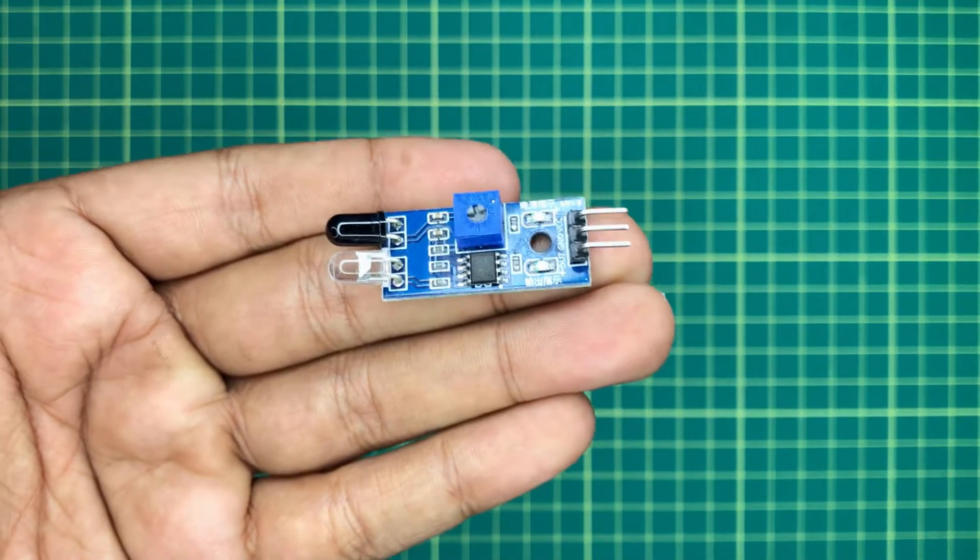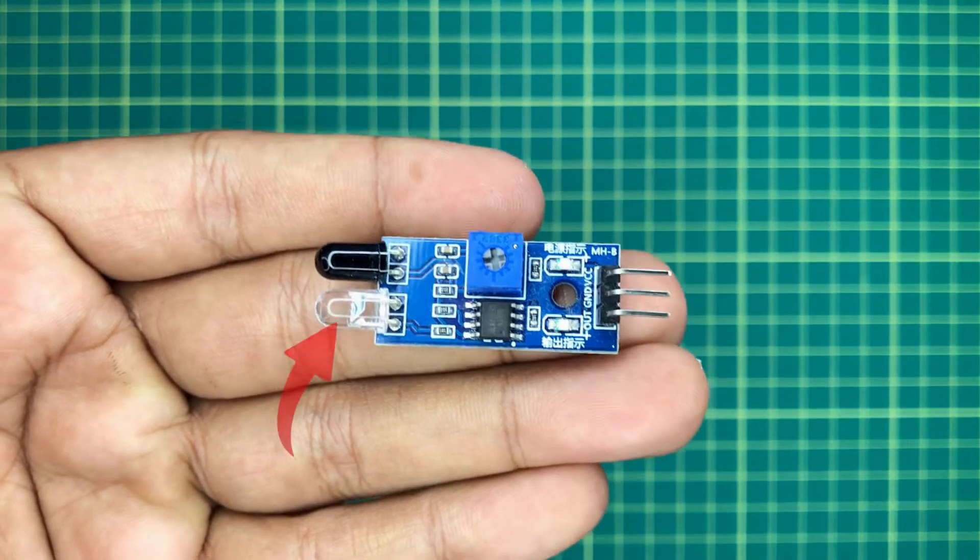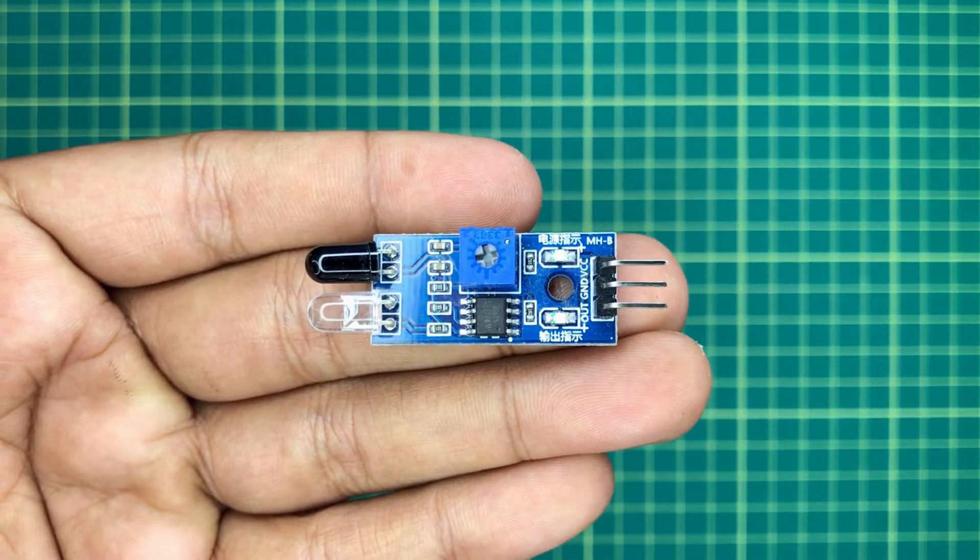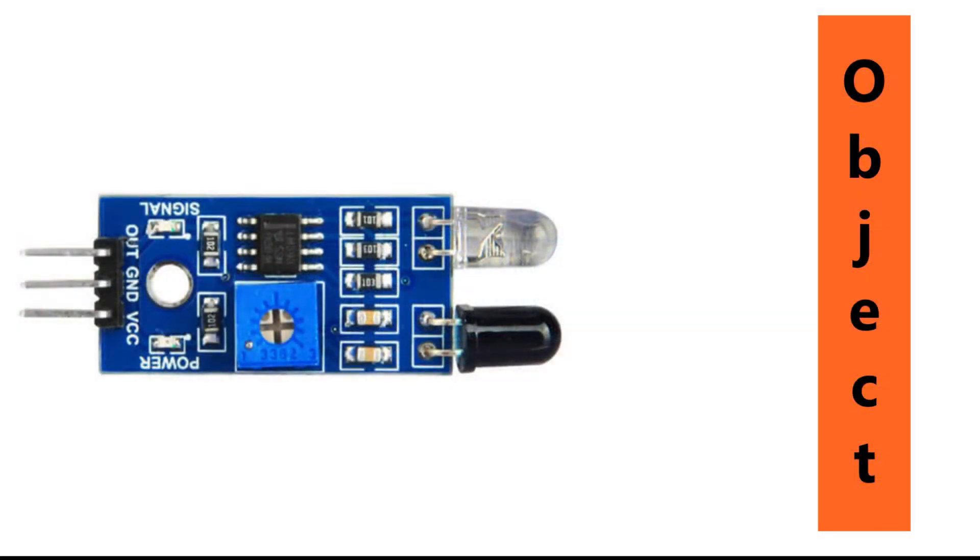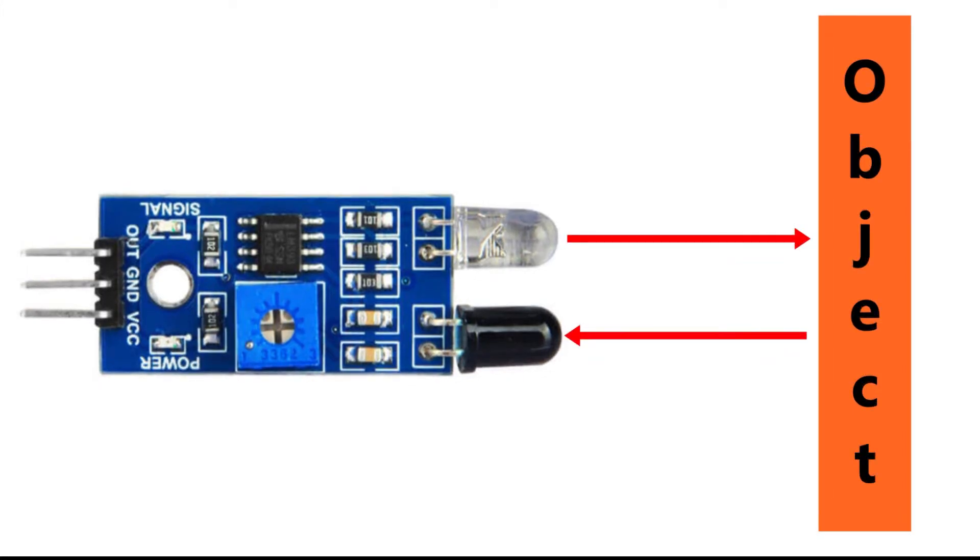Now, let's take a look into the sensor. This clear LED is an infrared emitter which emits IR signals. When it hits an object, it will bounce back and detects by this black color IR receiver.